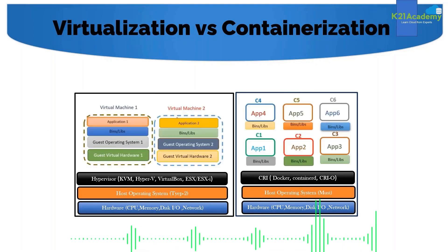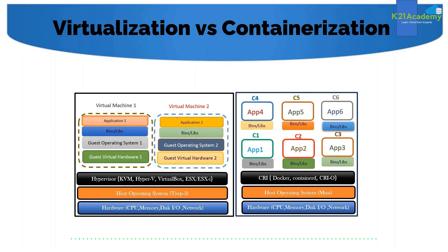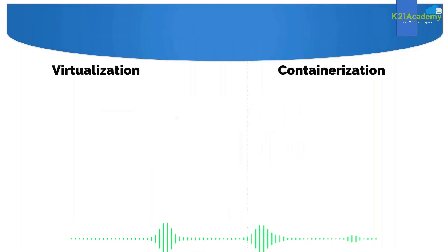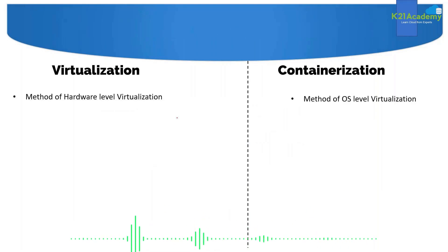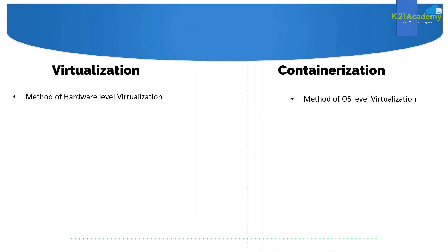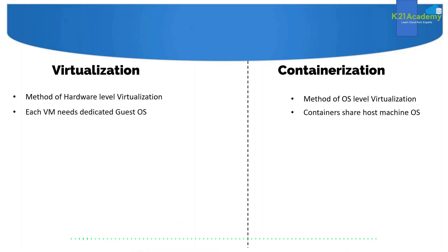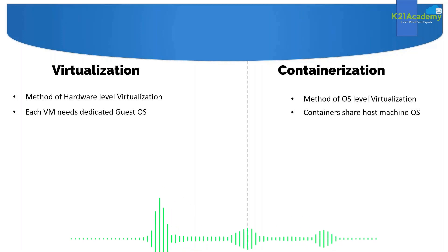This is how a virtual machine looks. The key differences: virtualization is the method of hardware-level virtualization, whereas containerization is the method of OS-level virtualization. Each VM needs its own dedicated guest operating system, whereas containers take help from the host operating system itself.